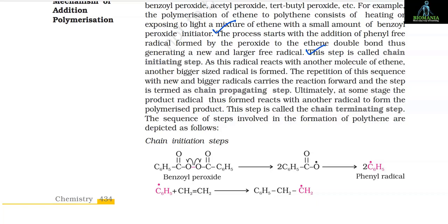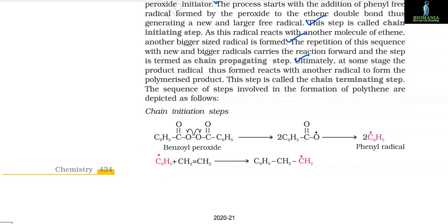As this radical reacts with another molecule of ethene, another bigger sized radical is formed. The repetition of this sequence with new and bigger radicals carries the reaction forward — this step is termed the chain propagating step. Ultimately, at some stage, the product radical reacts with another radical to form the polymerized product. This step is called the chain terminating step.